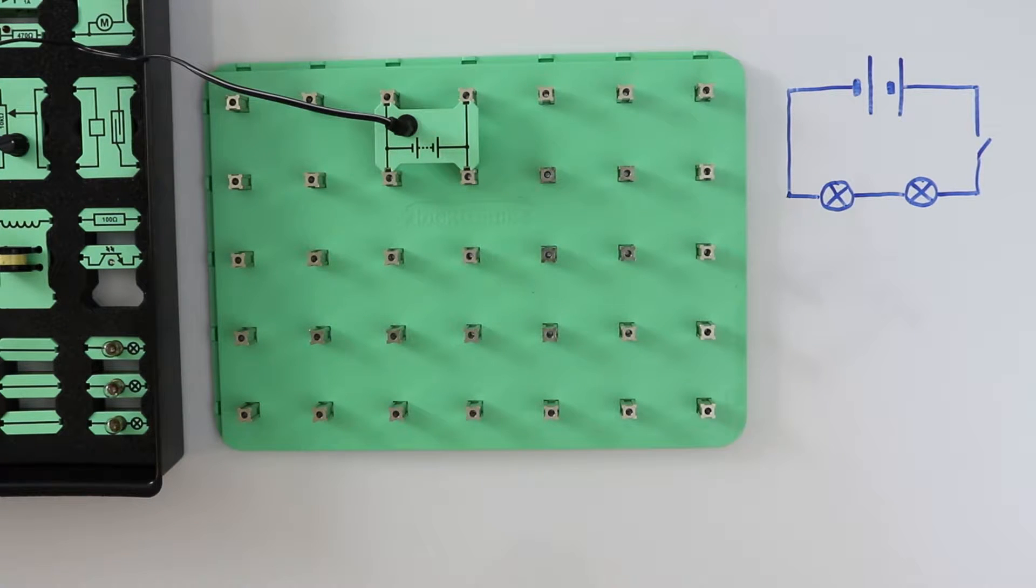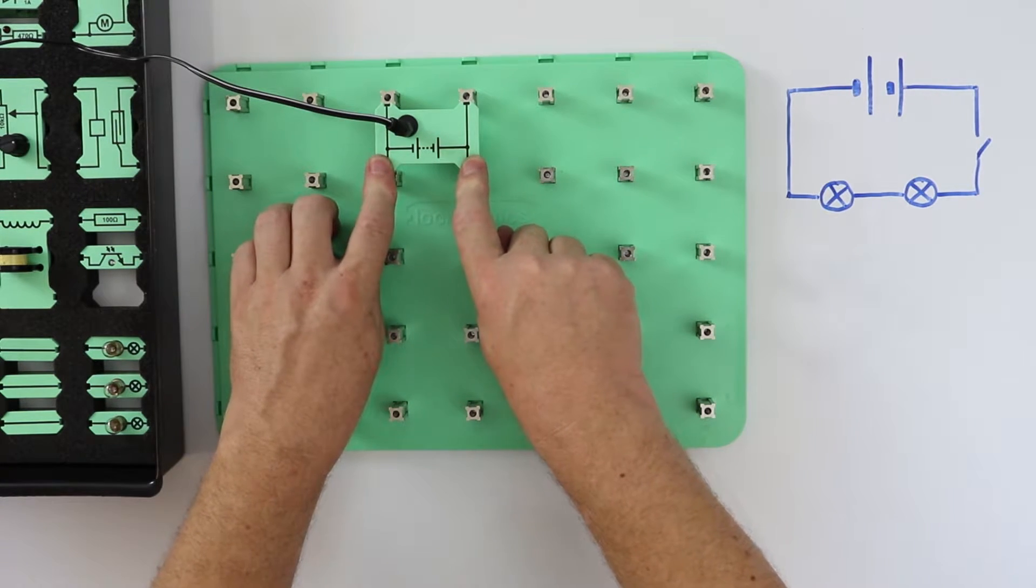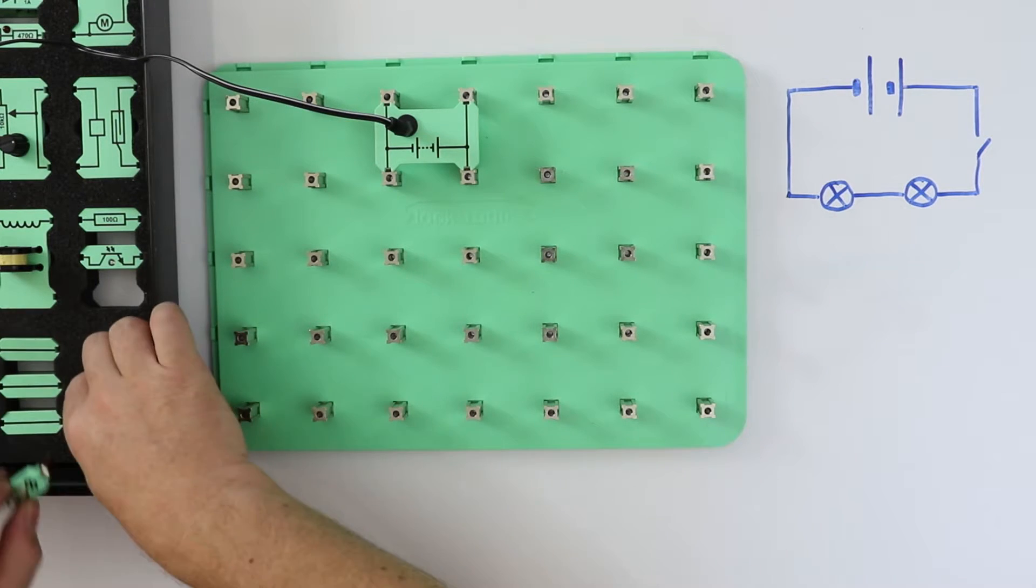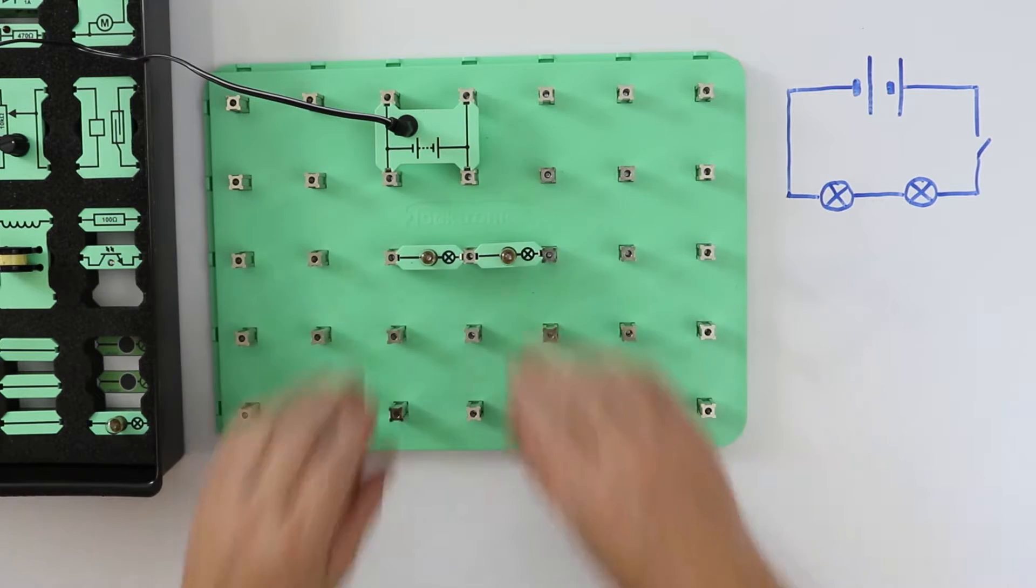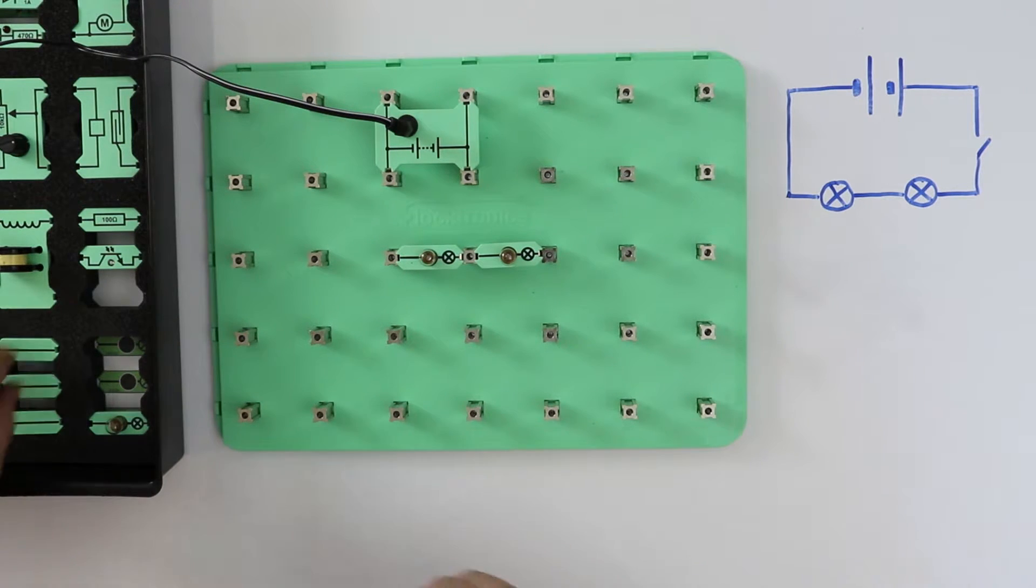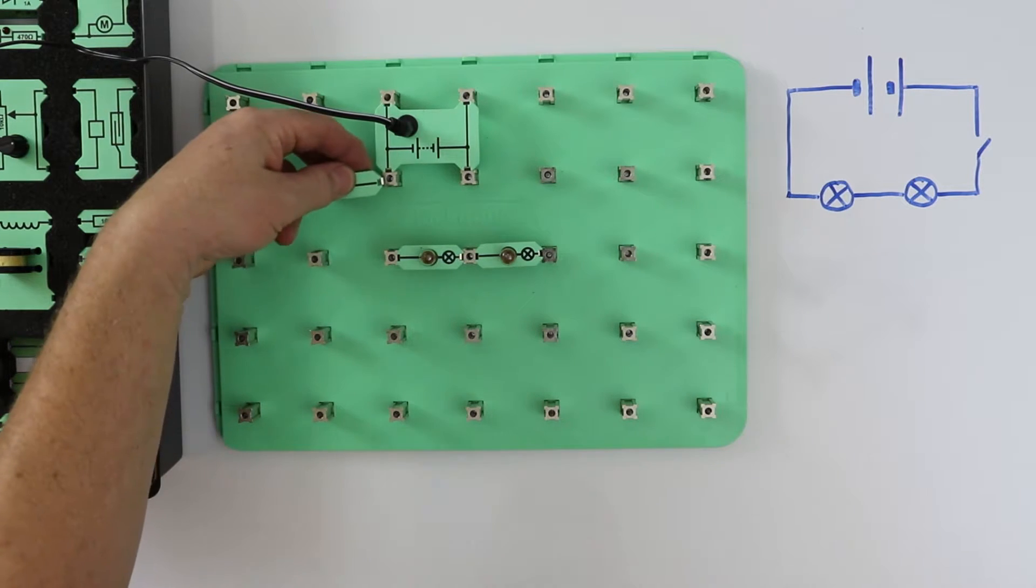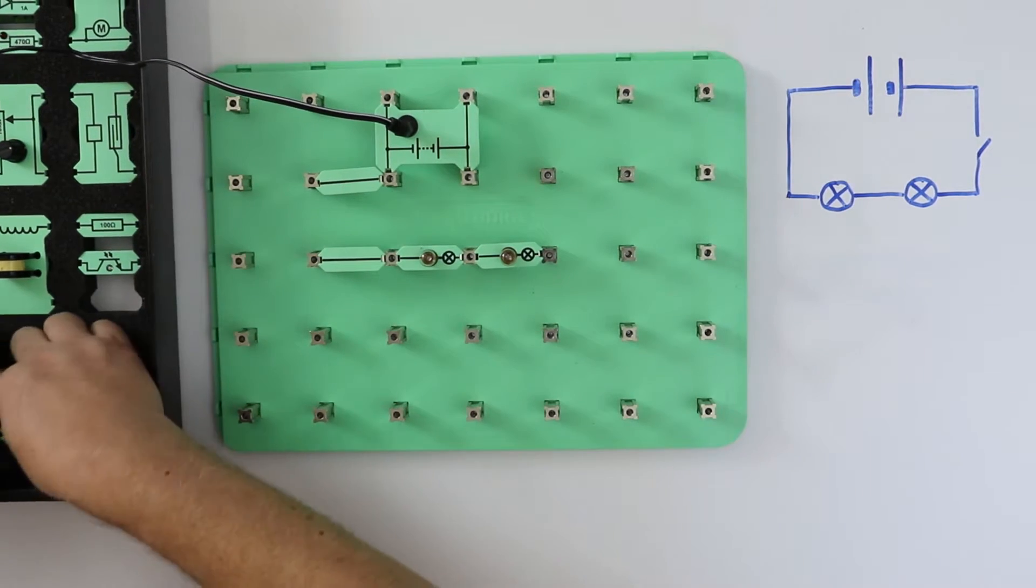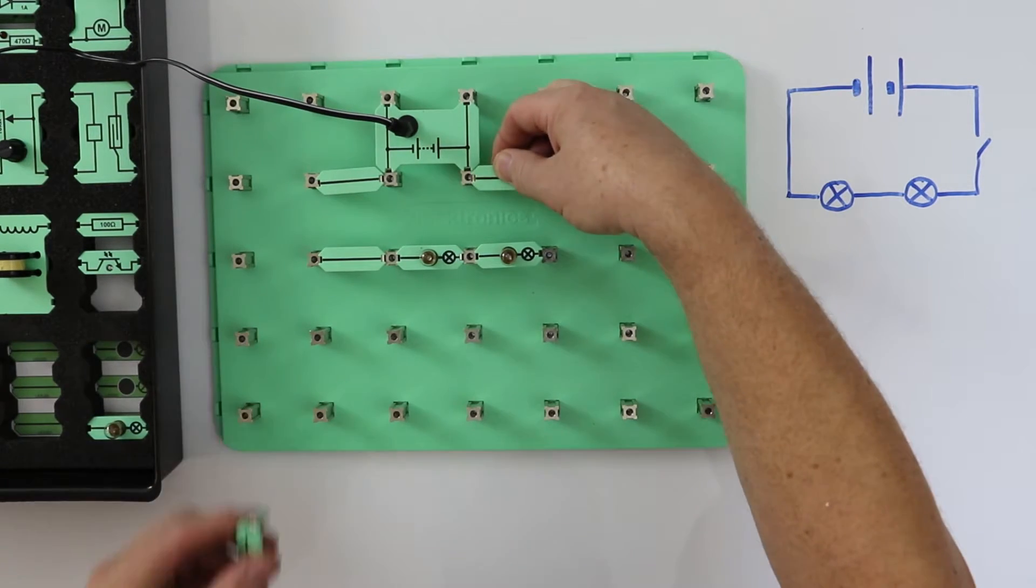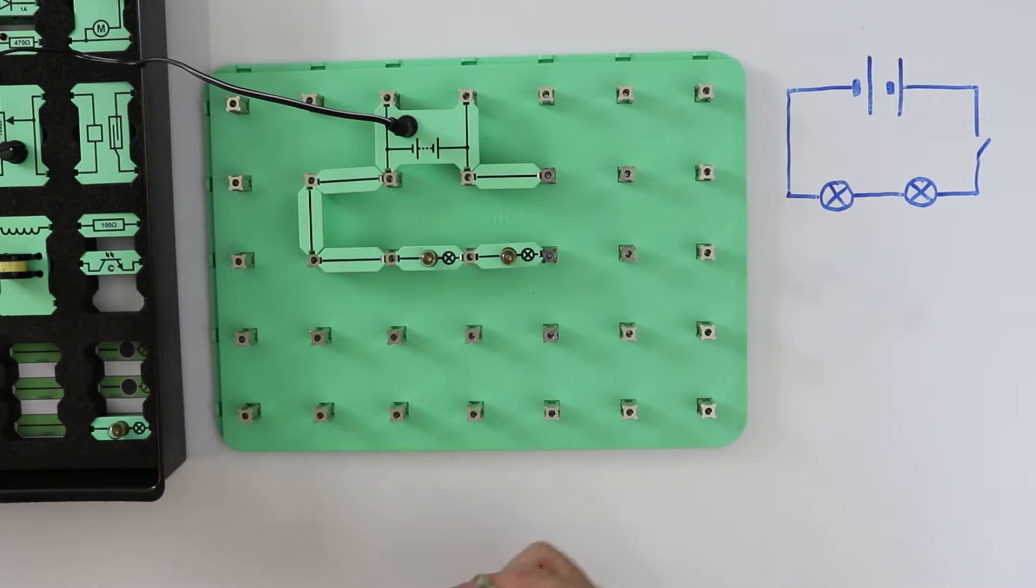We set up the series circuit as in this diagram. We're using a 12 volt power supply and we're going to use a couple of lights. Let's join these up with some wires. And I'll put in a switch.